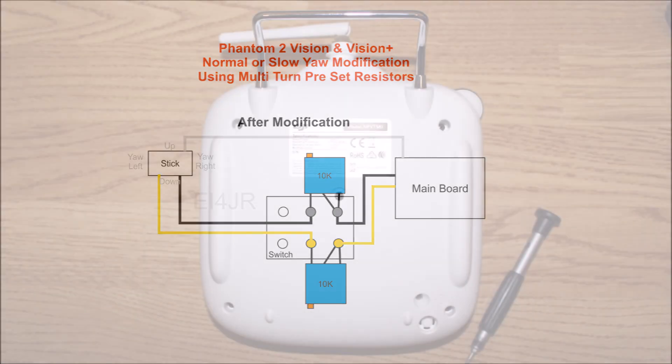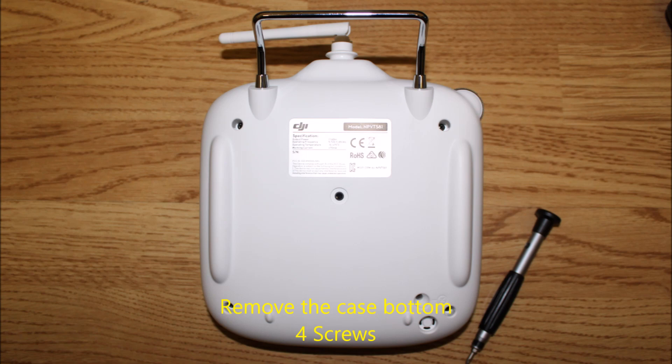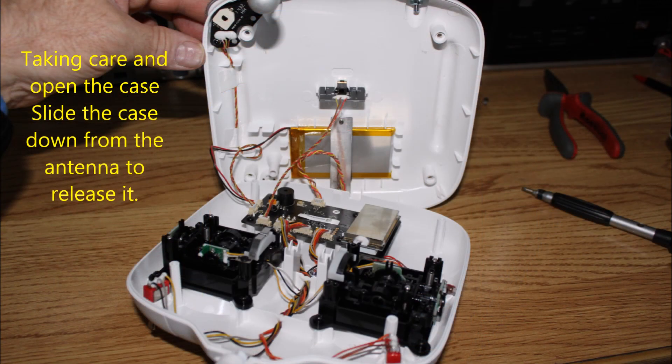We will now start and prepare for our modification by first removing the case bottom which is held together by four screws. Take care and open the case. To do this you may have to slide the case down from the antenna to release it.